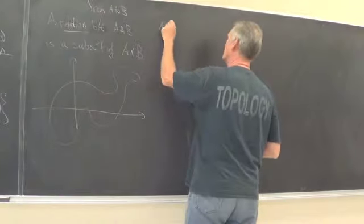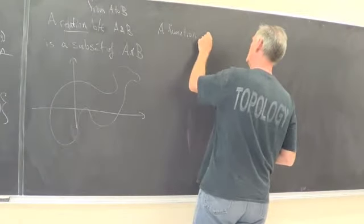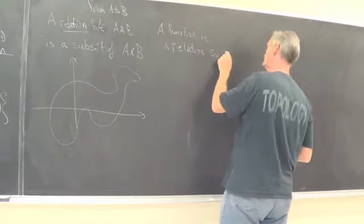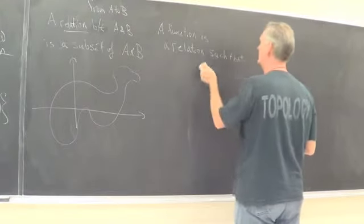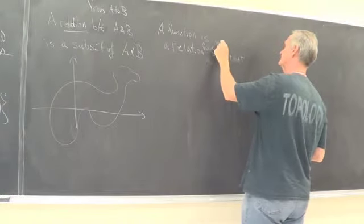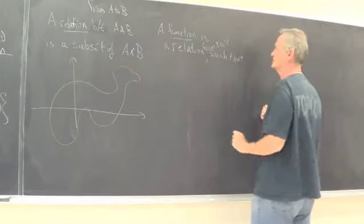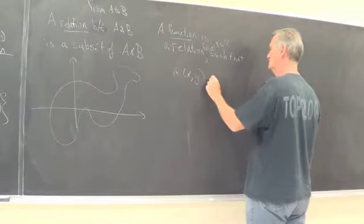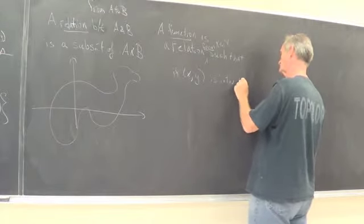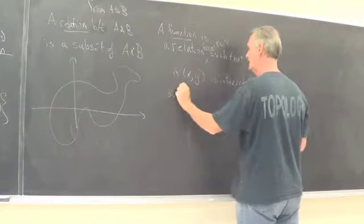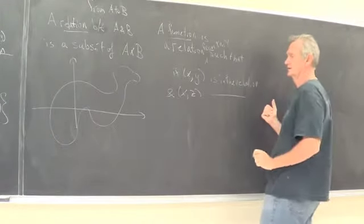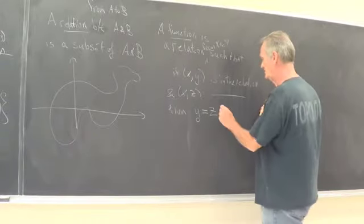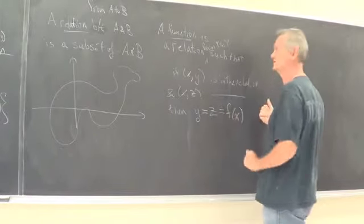So a function is a relation such that, let's say it's a relation from X to Y. So a function is a relation from X to Y such that if XY is in that relation and XZ is in the relation, then Y is identically Z. So if that's the case, we'll write that element as F of X.